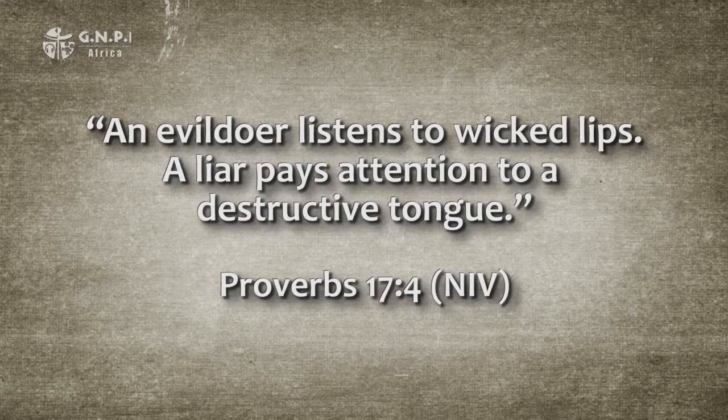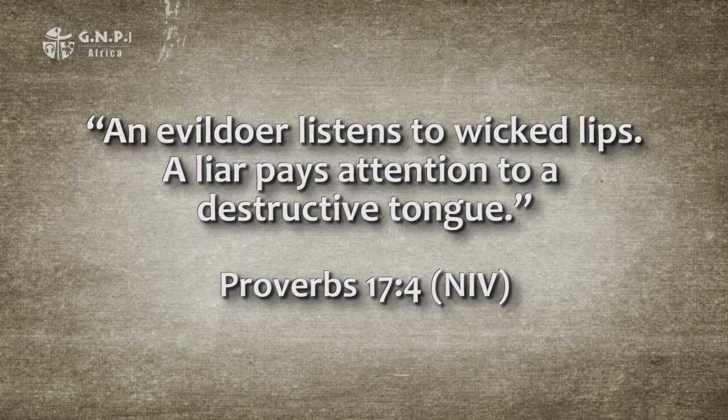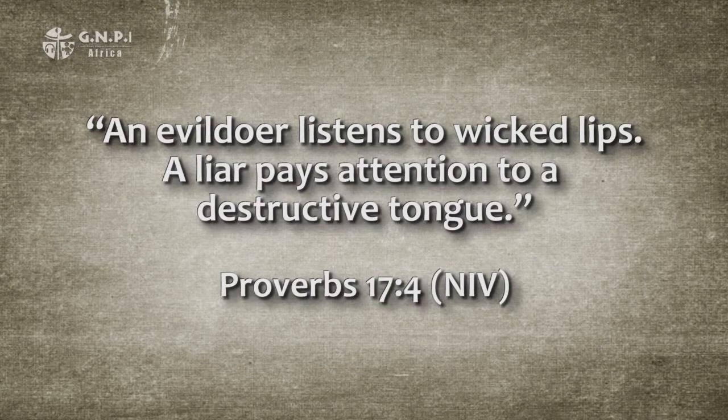Another synonymous proverb is found in chapter 17 verse 4: 'An evildoer listens to wicked lips; a liar pays attention to a destructive tongue.' In Proverbs, an evildoer and a liar are parallel descriptions of a wicked person. Also, wicked lips and destructive tongue are parallel instruments for communication. The two descriptions are intended to expand and reflect on each other.